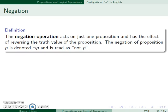Our next operation will be the negation operation. Rather than combining two propositions, this one affects just one proposition and reverses the truth value. And it's read as not P.